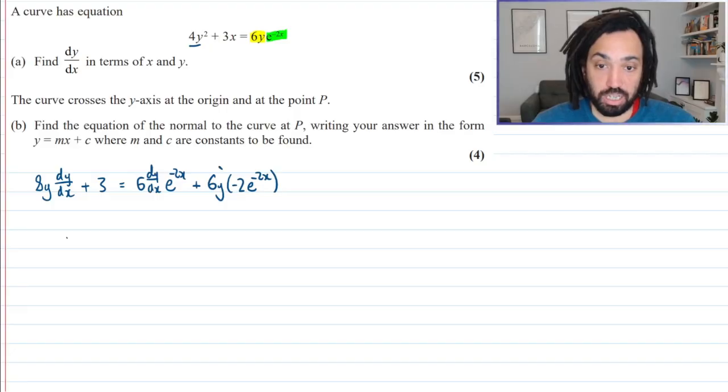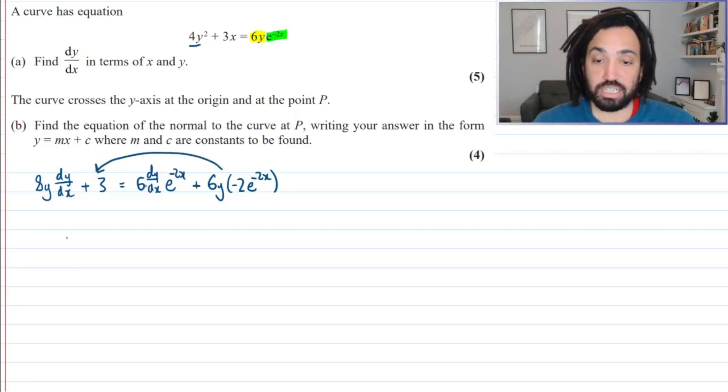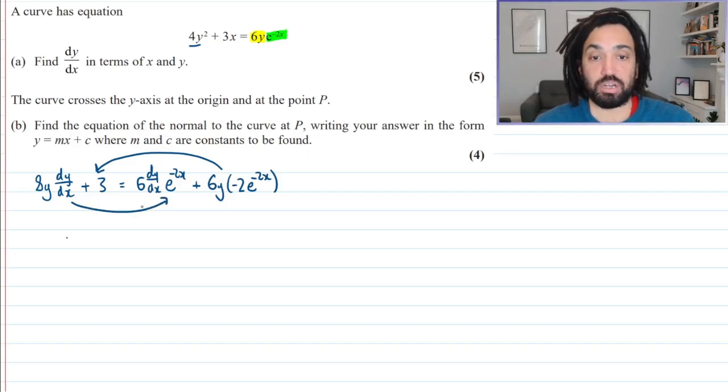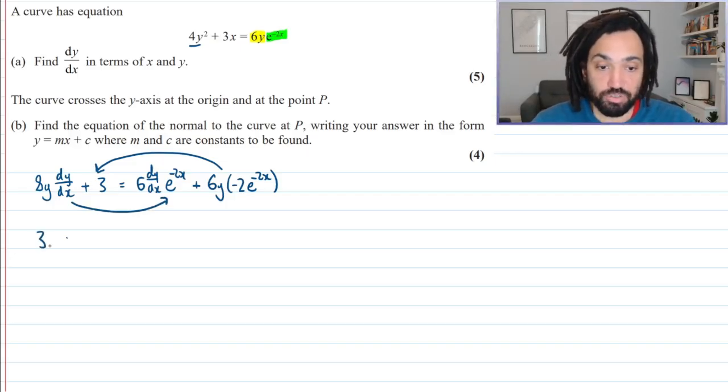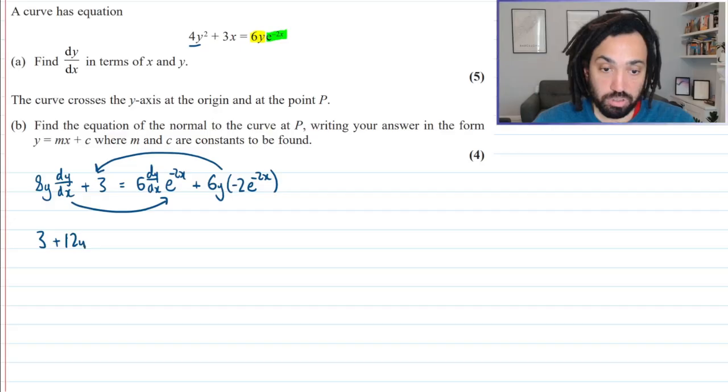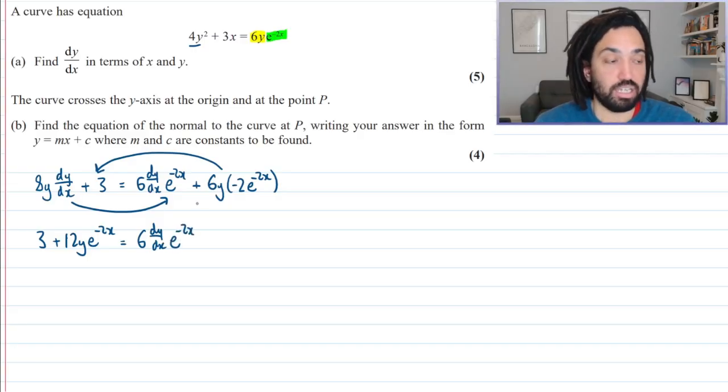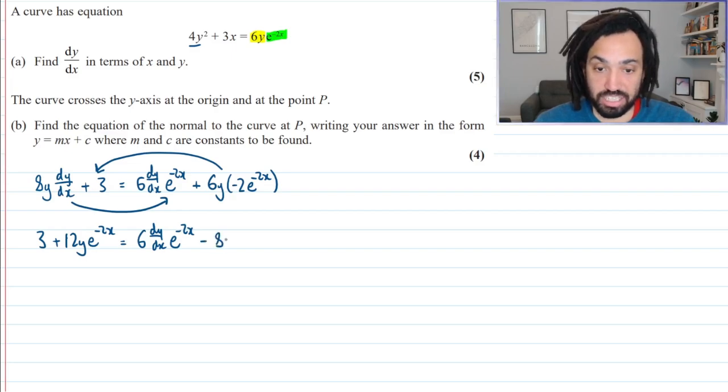OK, let's try and tidy this up in one step. I'm going to move this one to that side. Because it's negative, that will make it positive. And I'm going to move this one to this side to collect all the dy by dx's on the same side. So that's going to give me 3. This is minus 12. So when I moved it to the other side, it becomes plus 12. That's y and also e to the minus 2x.